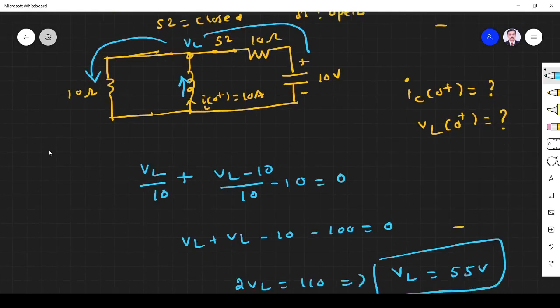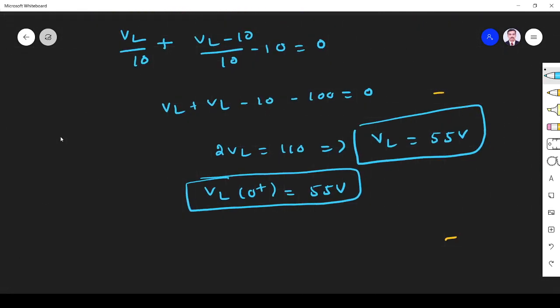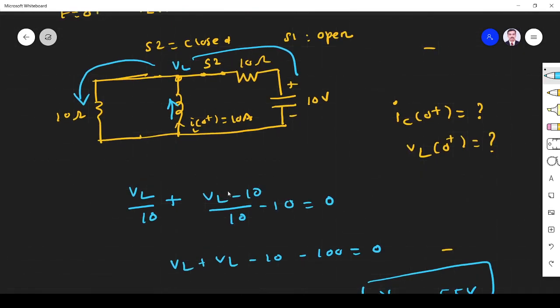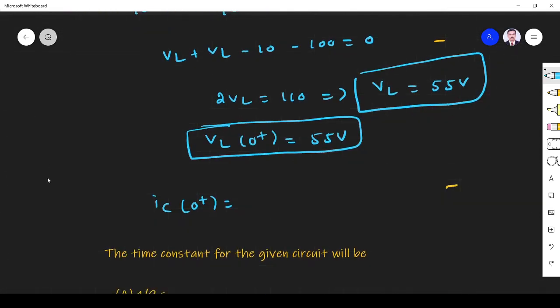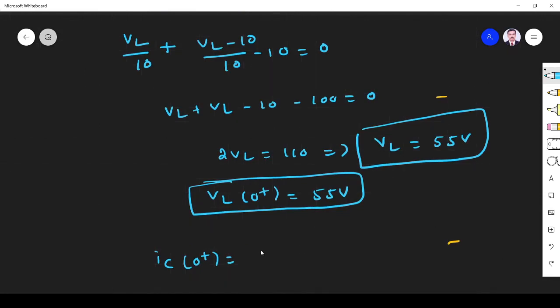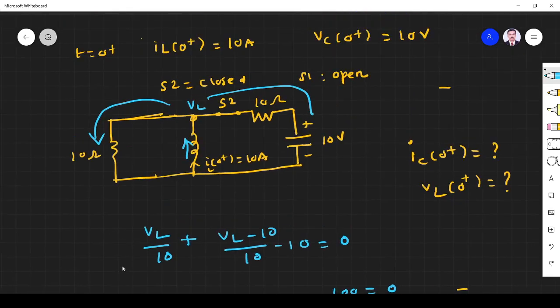So what is current across capacitor? Current through the capacitor I_C(0+). We have written already the equation. This is indicating current through the capacitor: V_L minus 10 divided by 10. So current through the capacitor I_C(0+) equals V_L minus 10 divided by 10. V_L we found is 55, so 55 minus 10 divided by 10 equals 4.5 ampere. So voltage across inductor is 55 volt, current through the capacitor is 4.5 ampere.